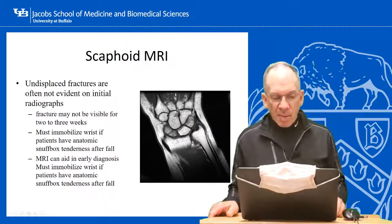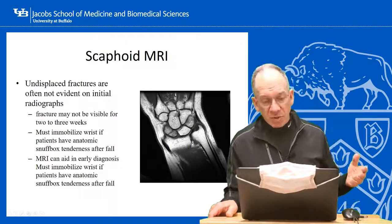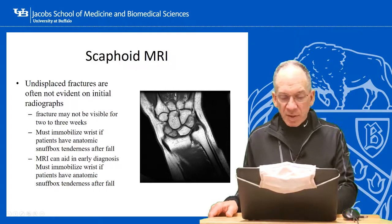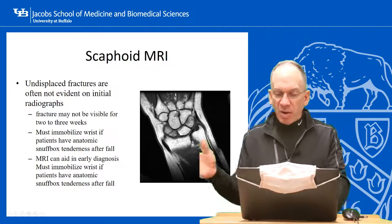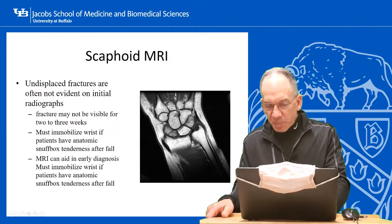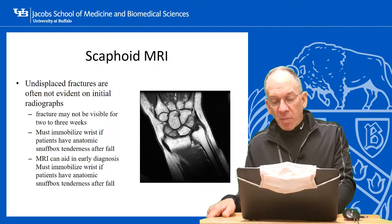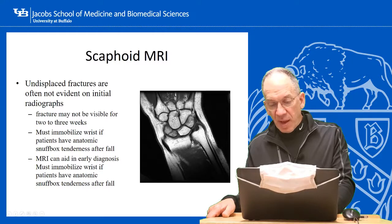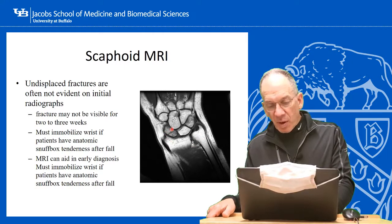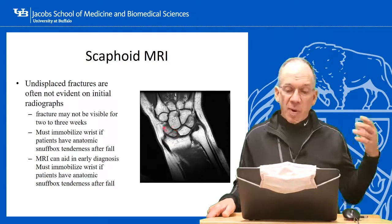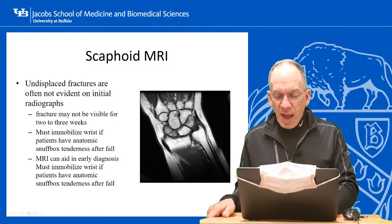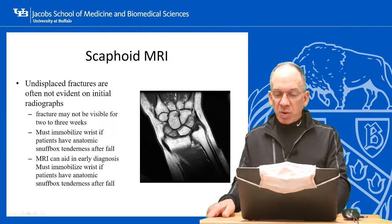Undisplaced scaphoid fractures are often not evident on initial radiographs, maybe not even for two to three weeks. On MRI, specifically a T1 or low-spin image, fat and bone marrow look bright. But in a fractured scaphoid you can see a line going across it, and it doesn't have normal fat intensity because there's edema from the broken bone. This is what a scaphoid fracture looks like on a T1 image.